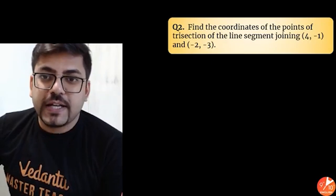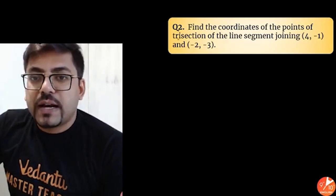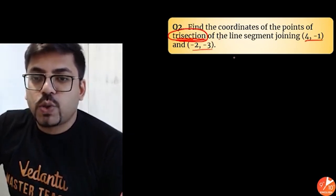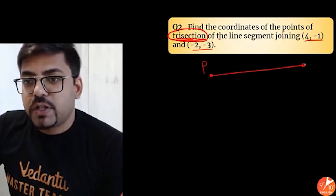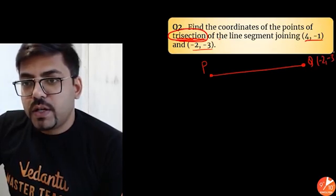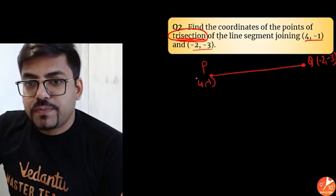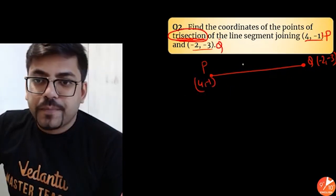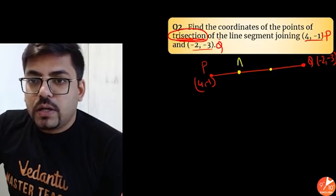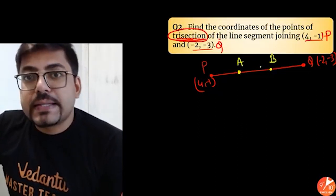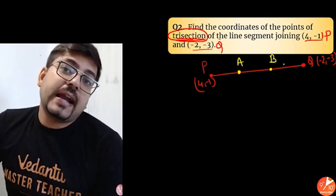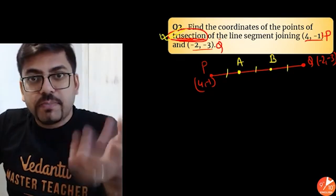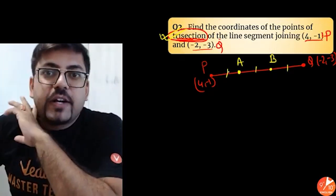Here is the next question: find the coordinates of the point of trisection of the line segment joining (4, minus 1) and (minus 2, minus 3). Now the word 'trisection' is important. You have a point P with coordinates (4, minus 1) and point Q with coordinates (minus 2, minus 3). On this PQ you get two points A and B such that A and B divide the entire line segment into three equal parts — that is why it is called trisection, three equal divisions.